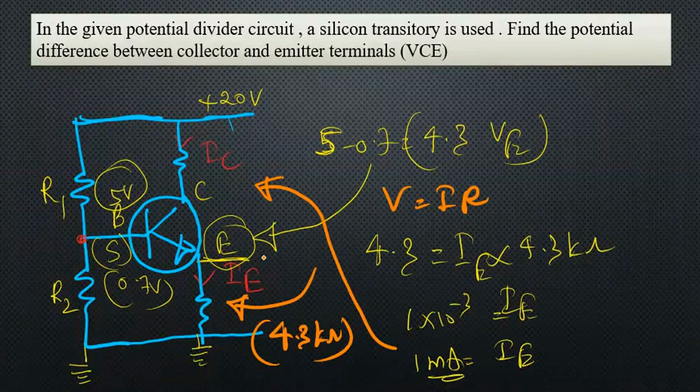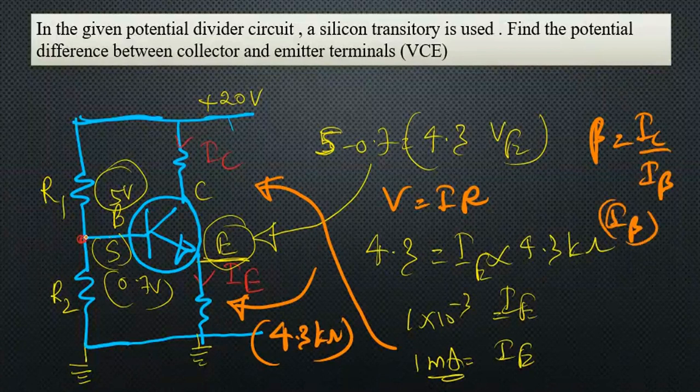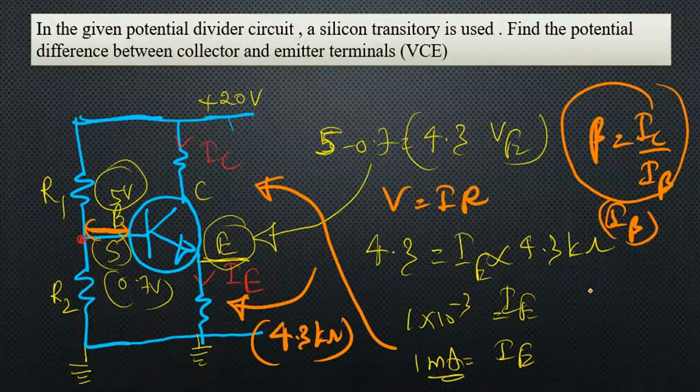Now our next step is to find IC. To find IC, actually we need to find at least IB or we need the beta value—beta is IC over IB, the current gain. It's not given as data, and again we cannot find IB because we don't know the resistor between these terminals and this point. So we cannot find IB and beta is also not given.